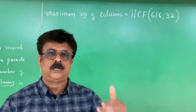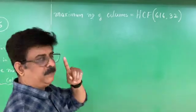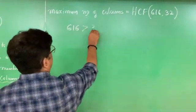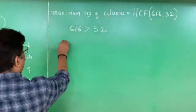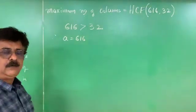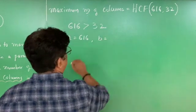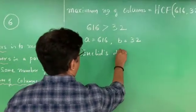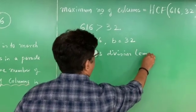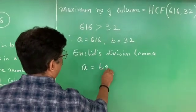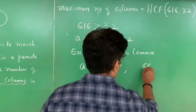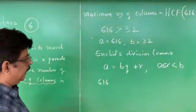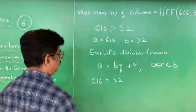The first step is to identify which is the bigger number. 616 is greater than 32, so a = 616 and b = 32. Euclid's division lemma states: a = bq + r, where 0 ≤ r < b.